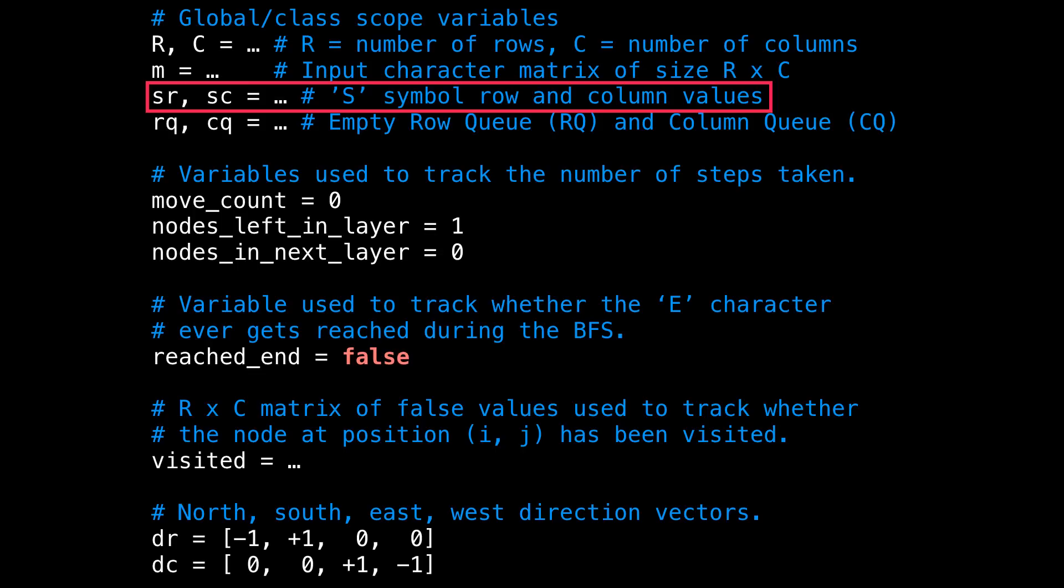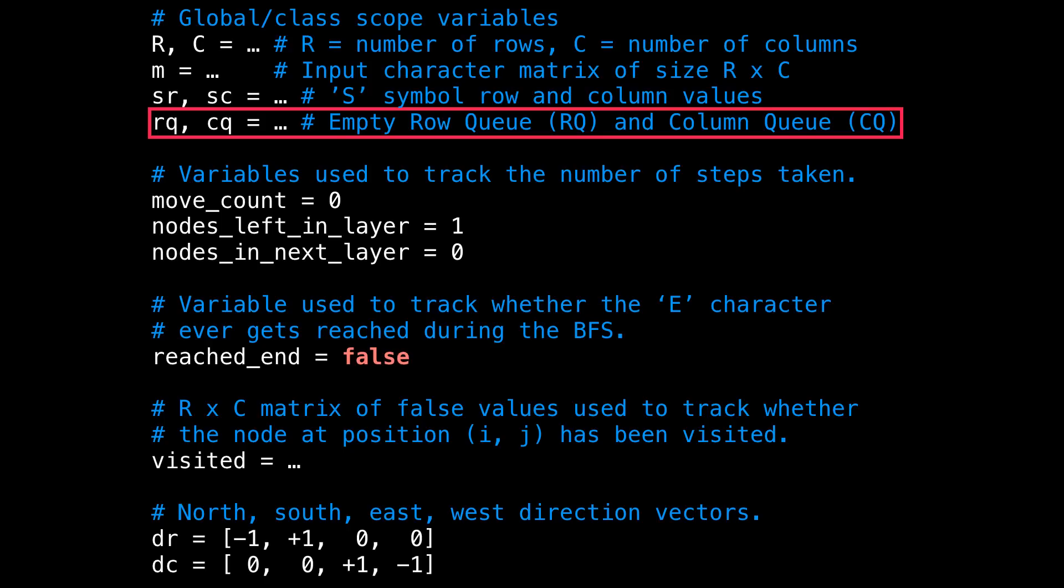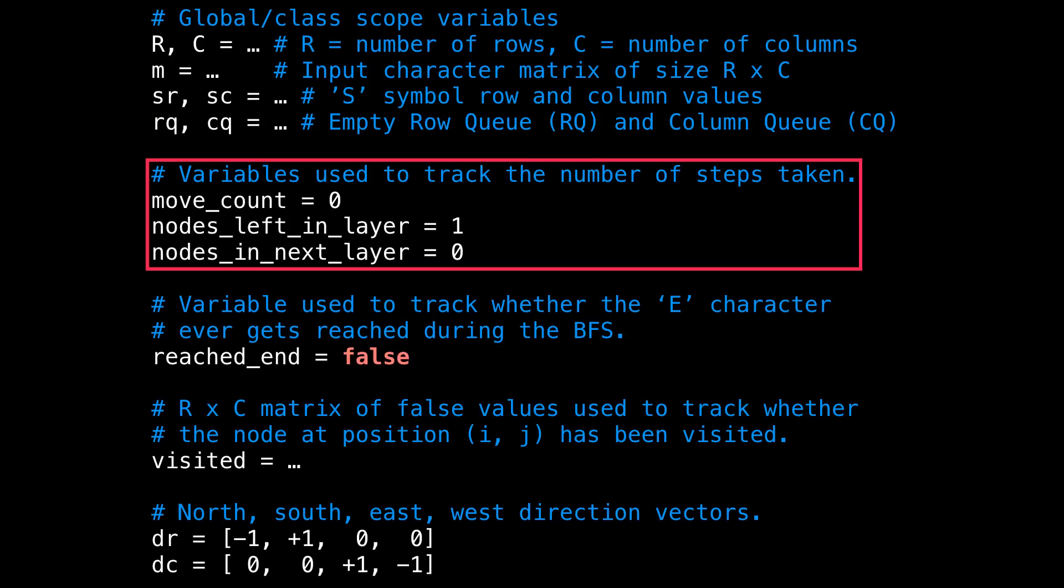We'll need this to start our breadth-first search. rq and cq are two queue data structures that represent the row queue and the column queue. We'll be enqueuing and dequeuing elements from during the breadth-first search.